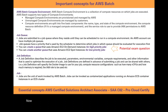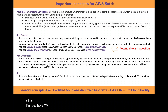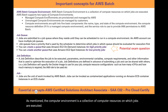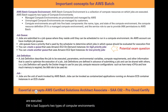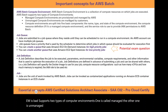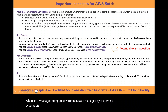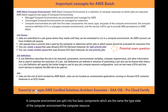Let's go through those important concepts in more detail. First, the AWS Batch compute environment is a collection of compute resources on which jobs are executed. AWS Batch supports two types of compute environments: managed and unmanaged. A managed compute environment is provisioned and managed by AWS, whereas an unmanaged compute environment is managed by customers. A compute environment is split into five basic components: the name, the type, the state of the compute environment, the compute resource definition, and the service role used to provide IAM permissions to AWS Batch.